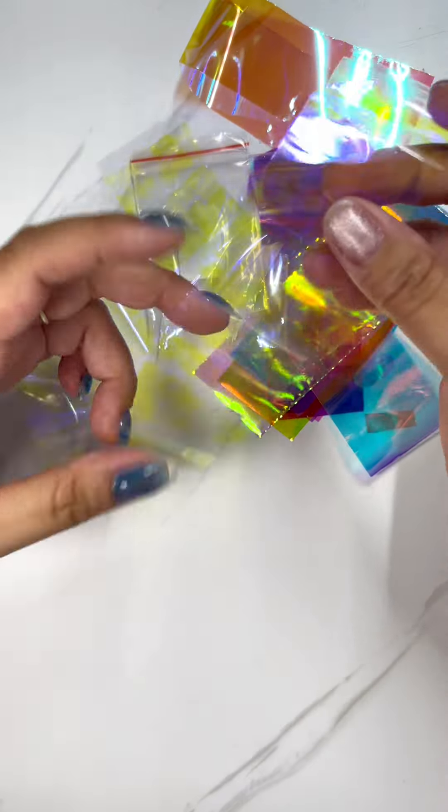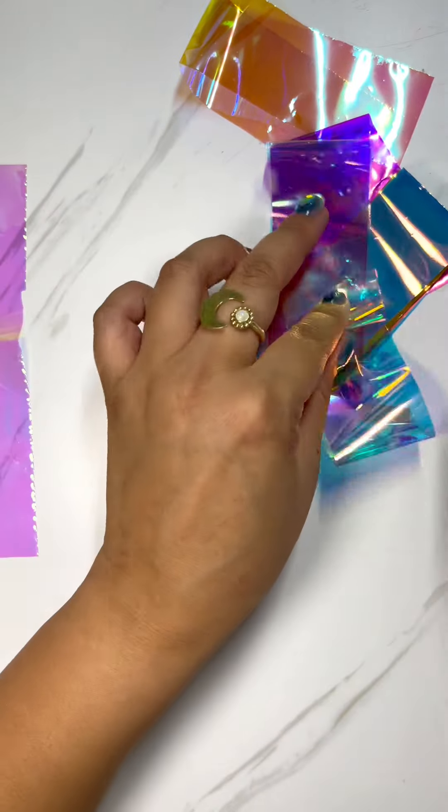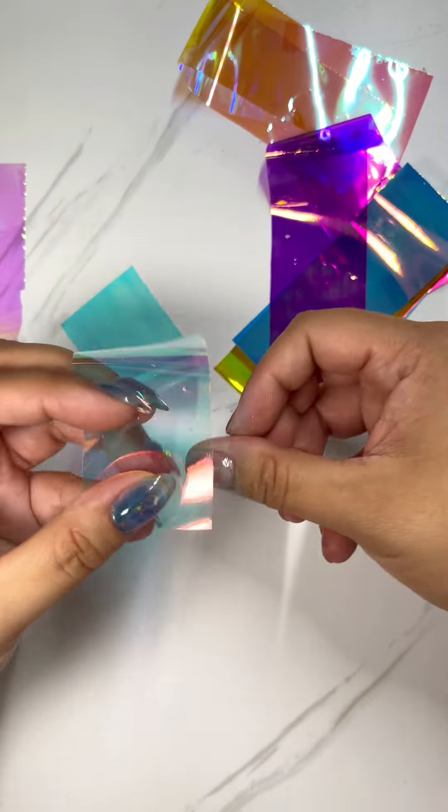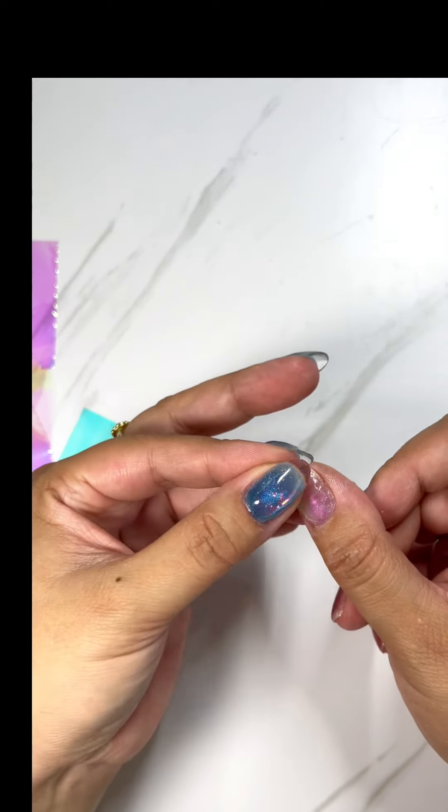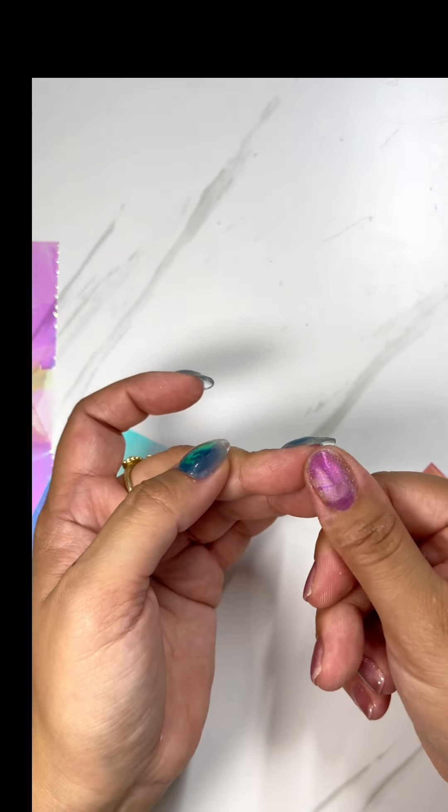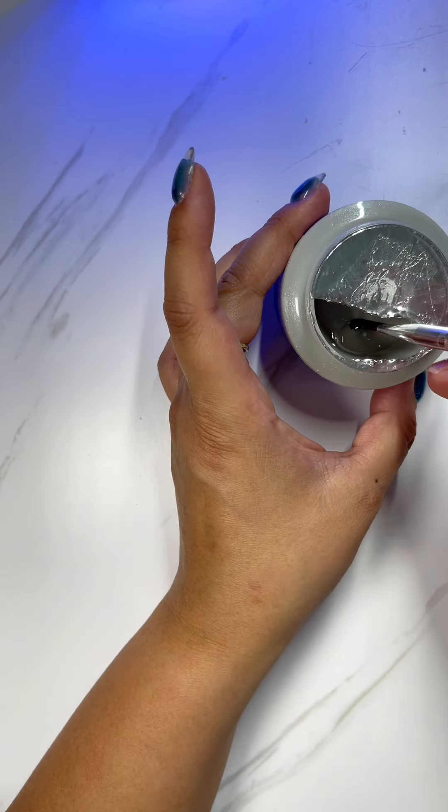I bought this multi-pack of Aurora Ice film in different colors and I just picked out which ones I liked against the nail color that I had picked, and I cut them to roughly the size of my nails.